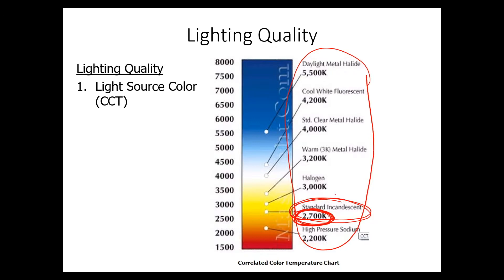What's counterintuitive about this is the higher you go in temperature, the more blue the light appears. We often call that cool white — around 4100 Kelvin — although technically it's actually a warmer temperature than standard incandescent lamp color. This is important because it establishes the ambiance of an environment.